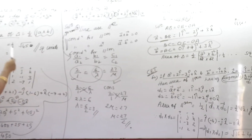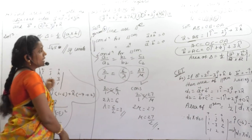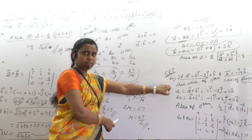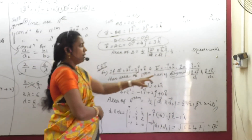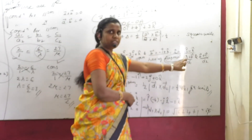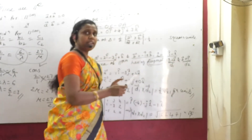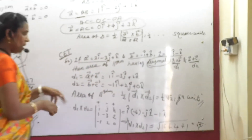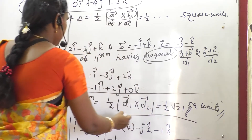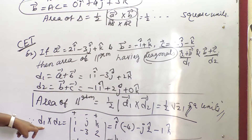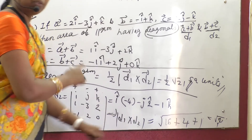Next, area of parallelogram. Area of parallelogram given two diagonals — with some simplification for D1 and D2. We have to simplify for D1 and D2 first, then apply the formula for area of parallelogram. How to find D1, D2, D1 cross D2 and the modulus of D1 cross D2 — all that is discussed here.